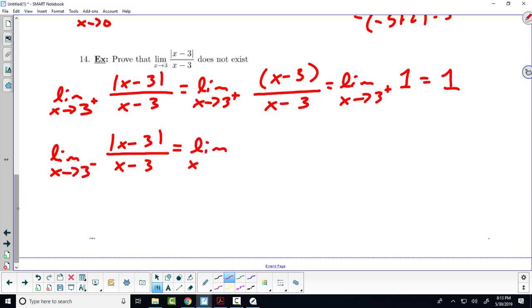So this gives me the limit as x approaches 3 from the left of negative x minus 3 over x minus 3. What does this simplify down to? It simplifies down to a negative 1. What is the limit of a constant? It's just the constant.